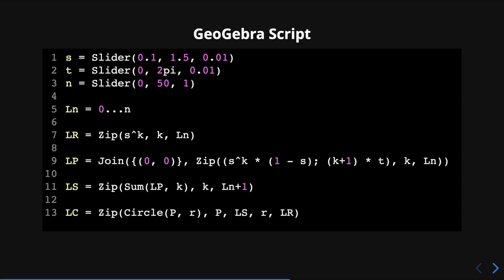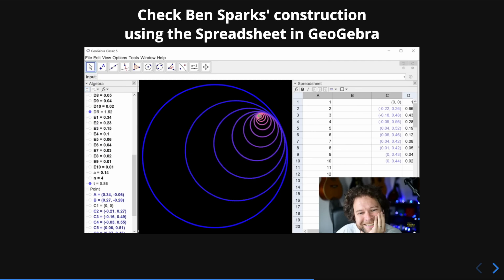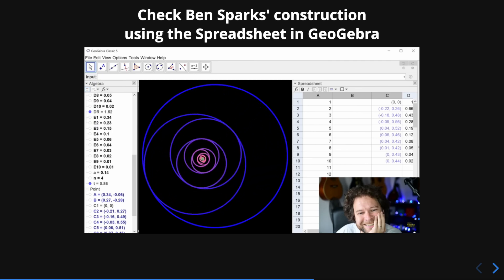Here is the GeoGebra script in case you want to reproduce the construction. By the way it is also possible to build this animation using the spreadsheet in GeoGebra. If you want to learn how to do it I recommend you to check Ben Sparks' youtube channel where he also discusses some mathematical properties related to the golden ratio. One advantage of using the spreadsheet in GeoGebra is that we can easily change the colors of the circles. You should try it.